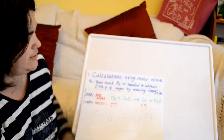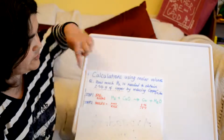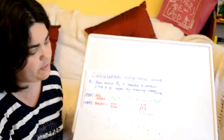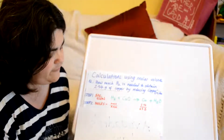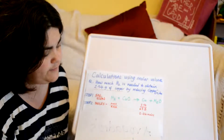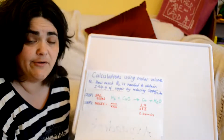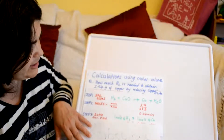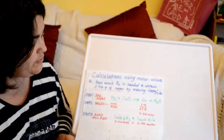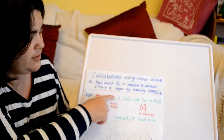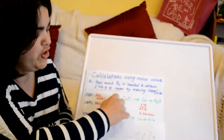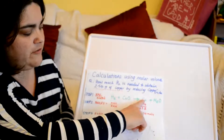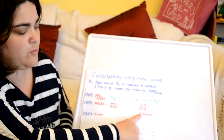Step one is always the balanced equation — it's written there for you. When you try this yourself, write 'EQN' so you know what step one is. Step two is to work out the number of moles of the substance we know. From the question, that's 2.54 grams of copper. Mass divided by relative atomic mass: copper is 63.5, so 2.54 ÷ 63.5 gives us our moles.